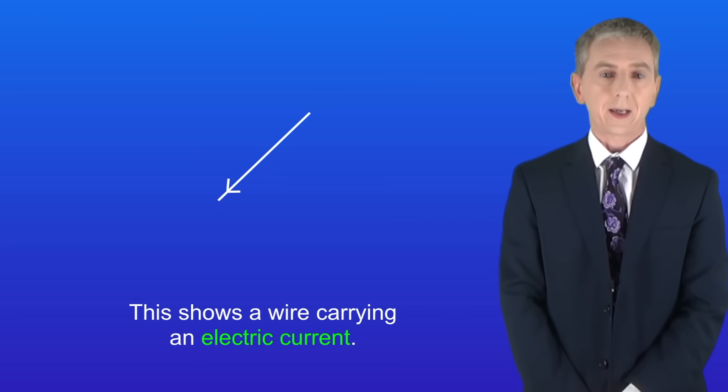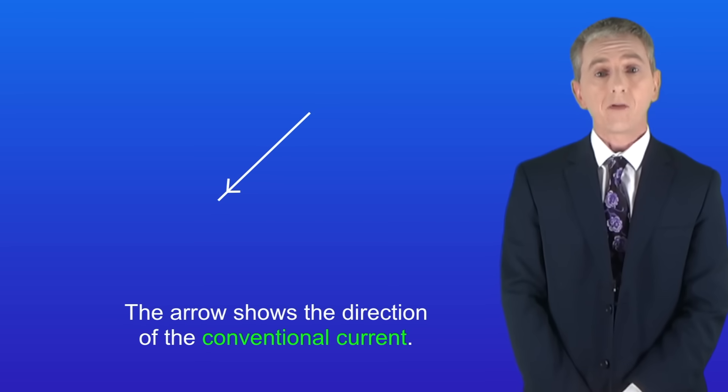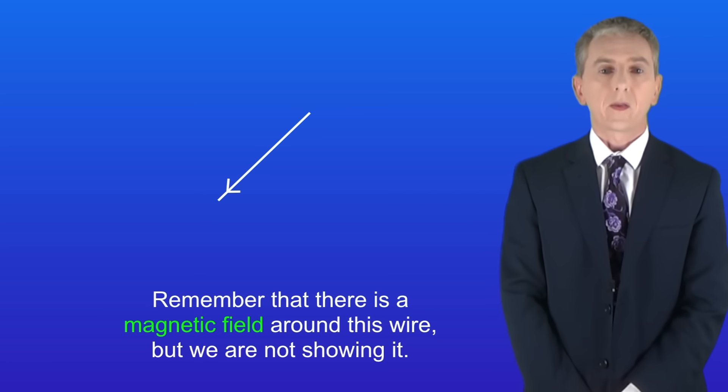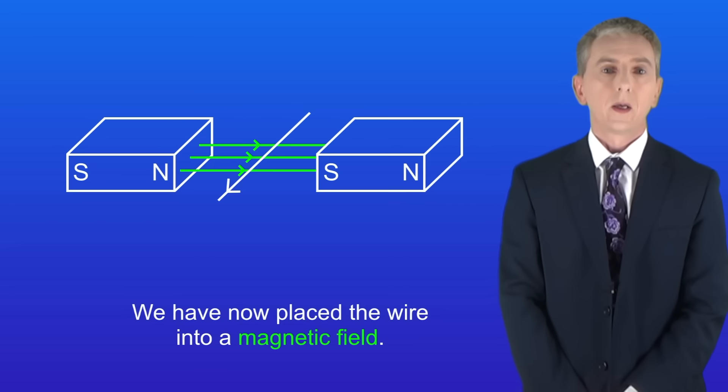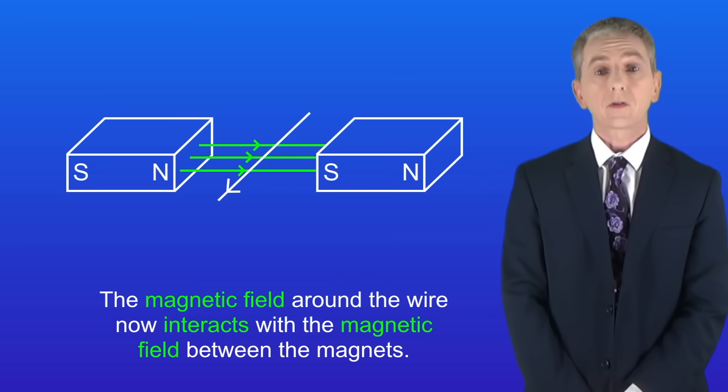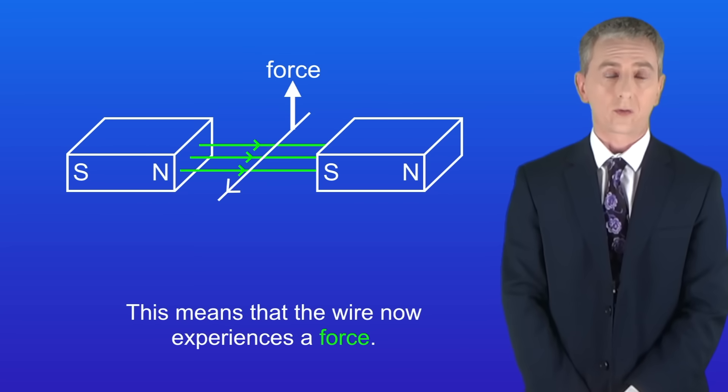I'm showing you here a wire carrying an electric current. The arrow shows the direction of the conventional current. Remember that there's a magnetic field around this wire but we're not showing it. We've now placed the wire into a magnetic field. The magnetic field around the wire now interacts with the magnetic field between the magnets. This means that the wire now experiences a force.